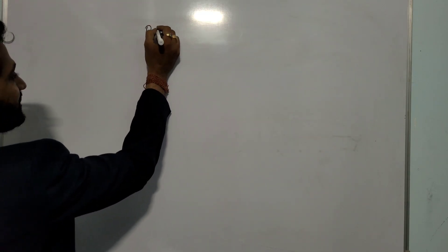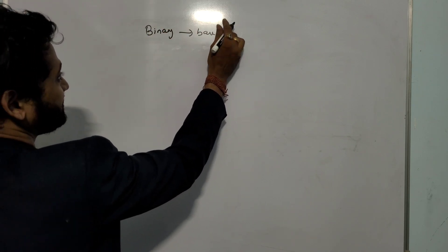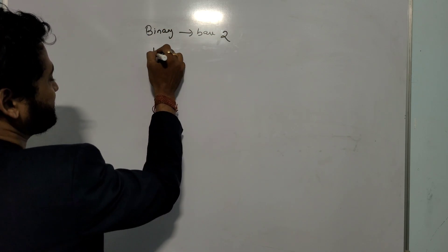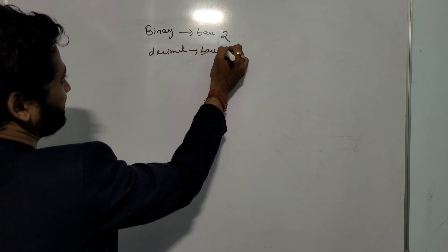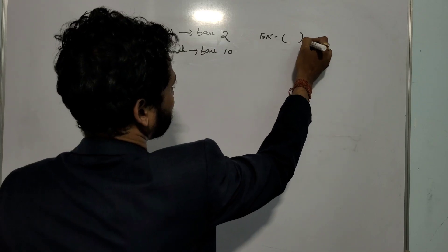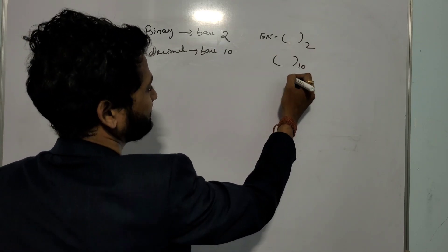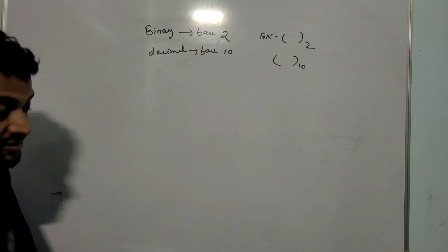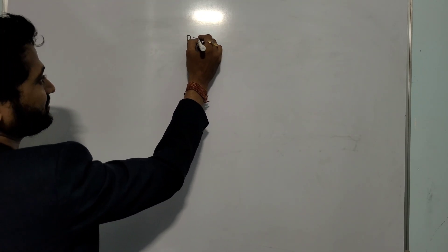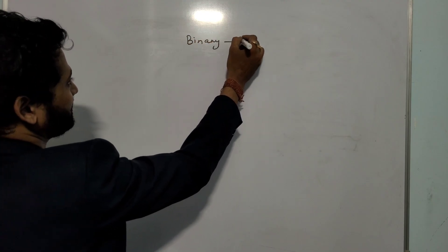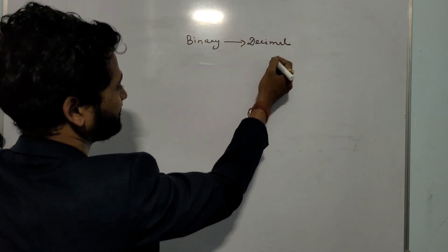So let's look at the binary number. Binary means base 2. And what is decimal? Decimal means base 10. For example, we can represent a number like this: base 2, and for decimal it will be like base 10. So now the first point: conversion of binary to decimal.